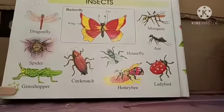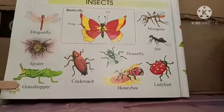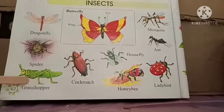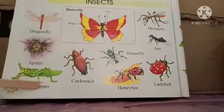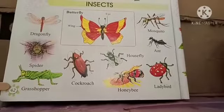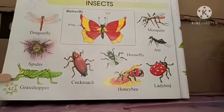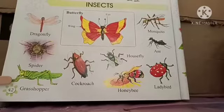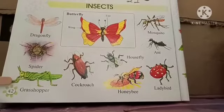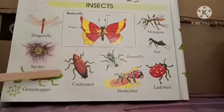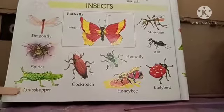Next, we have grasshopper. It is green in color. Grasshoppers are mostly found near grass — open areas, grounds, playgrounds. When you are playing, you can find them — grasshoppers.